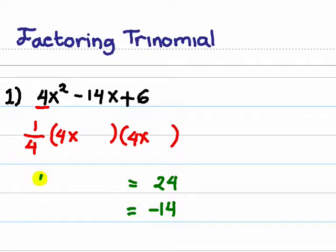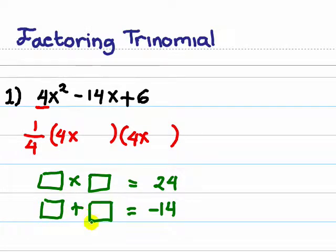Now we would like to find two numbers so that if we multiply we get 24. And simultaneously, when we add those numbers, we get negative 14.